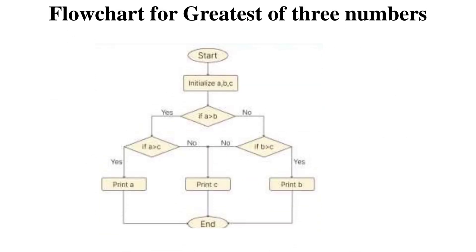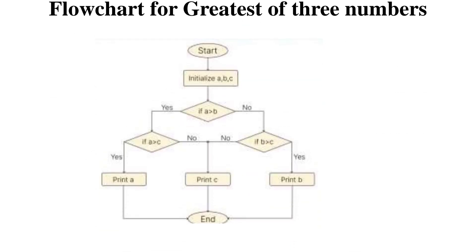The next is the flowchart for finding the greatest of three numbers. This flowchart involves decision-making symbols, because to find the greatest of three numbers we need to compare each number with the remaining two. I have started the flowchart, then read the values of A, B, and C. Then I check the first condition: A greater than B. If A is greater than B, it has two flows — yes and no.